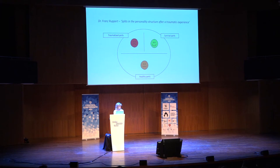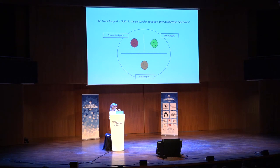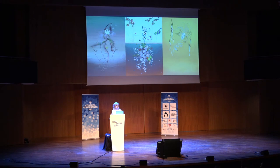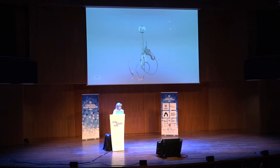I came across the theory of Franz Ruppert, who talks about how when trauma happens — when it's an overwhelming experience — the personality splits up. It cannot fully experience the trauma, so it splits into survival parts, healthy parts, and traumatized parts. I wanted to make three flowers from this: the left one representing survival parts, the middle the healthy parts, and the right the trauma parts. My idea was that you'd constantly switch between scenes and make the healthy flower grow while the surviving parts disappear.